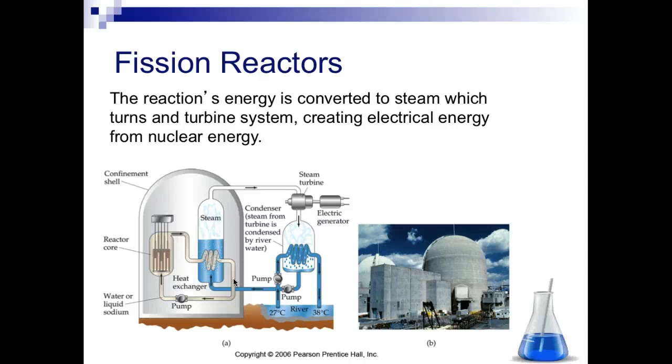Fission reactors work a little bit differently. The reaction's energy is converted into steam, which turns the turbine system, which will create electrical energy from nuclear energy. Here is what the inside of a nuclear pump would look like. We have an electric generator, we have our steam turbine, we have our pump. Our reactor core, this is where the nuclear reaction is happening, which will release energy, which will heat the steam, which will turn the turbine, causing energy, and it's a circular effect.